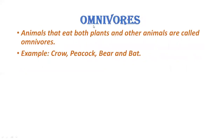Then omnivores. Animals that eat both plants and other animals are called omnivores. Omnivores kaun hote hai — jo ki both plants and other animals ko khaate hai. Unka jo food hota hai, woh dono taraf ka hota hai — woh plants bhi feed karte hai aur other animals ka flesh bhi feed karte hai. For example: crow, peacock, bear.